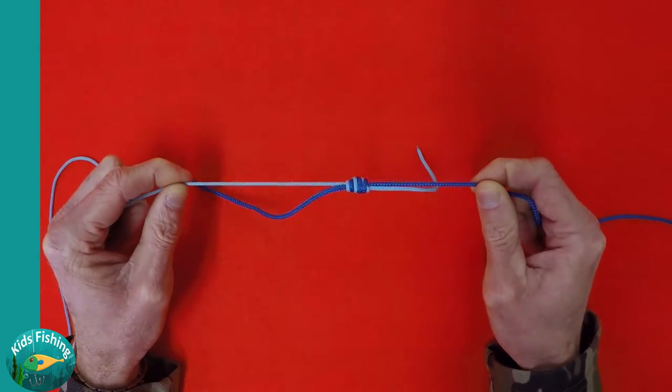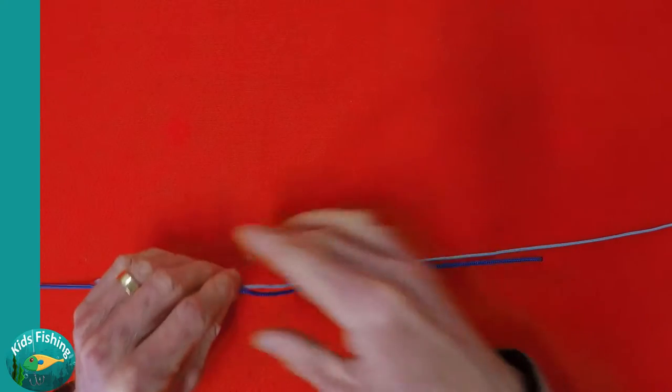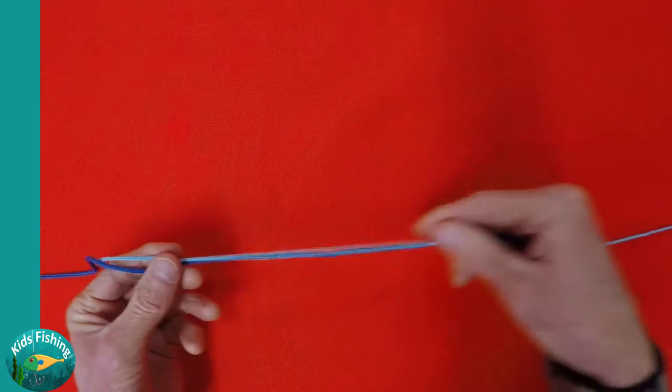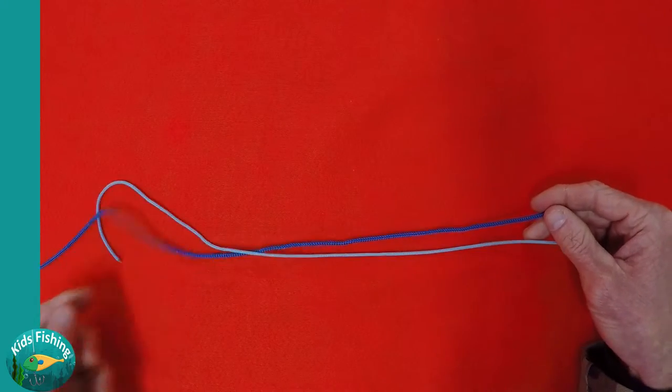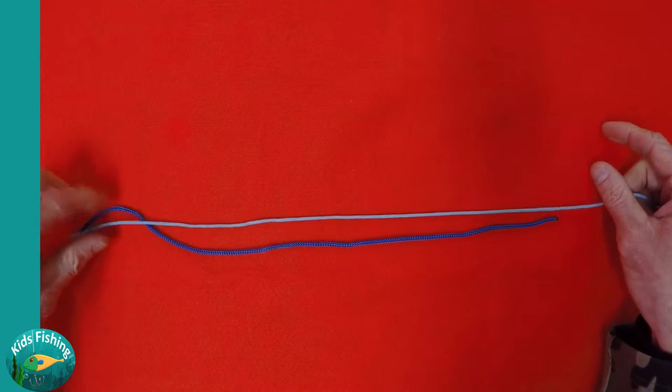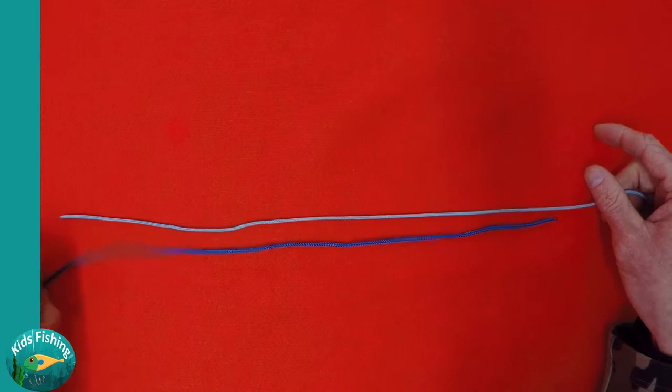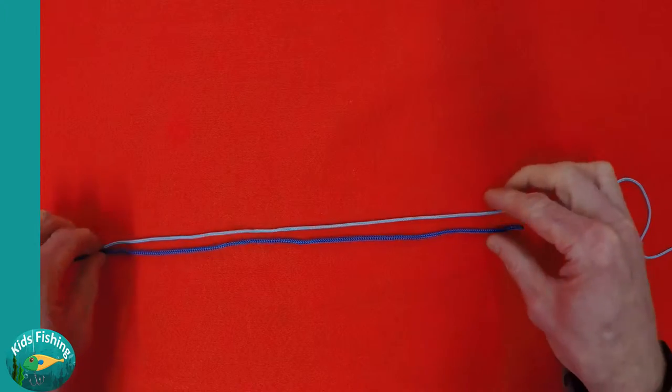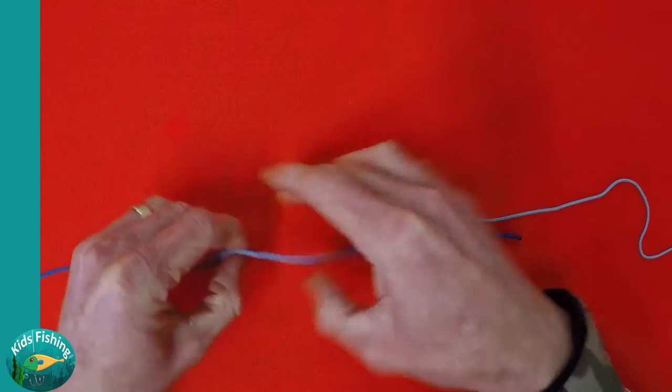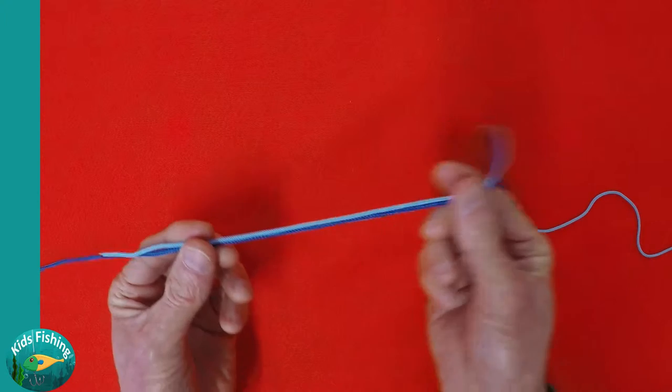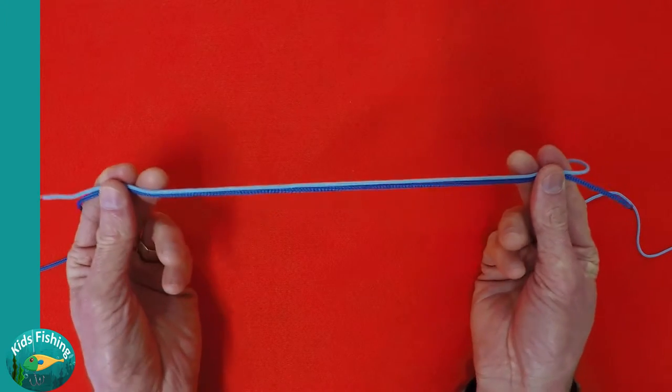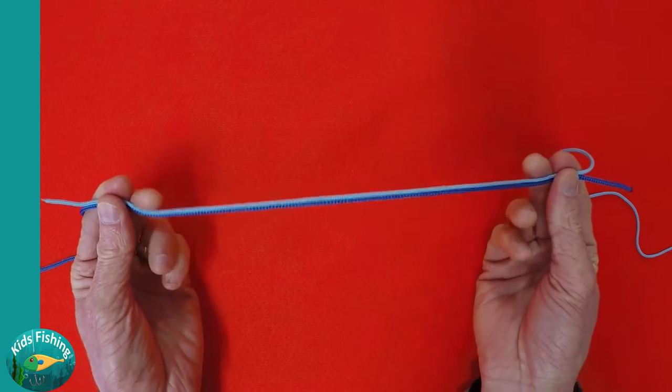The first thing we're going to do is have our two pieces of line overlap. So we've got the light blue leader and we have the dark blue main line. Now we overlap those and we have enough overlap to make it easy for us to tie the knot, so we want a little bit of line as working space on both sides.